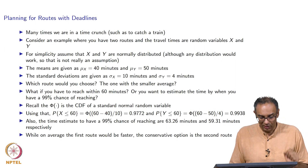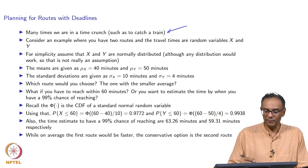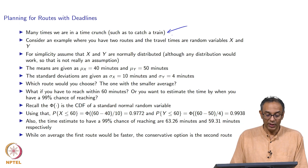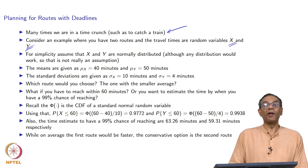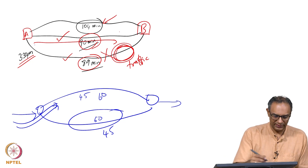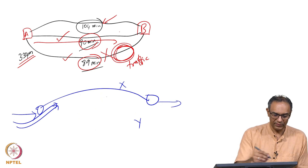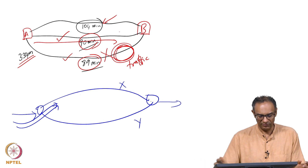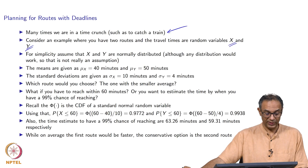Now, planning routes with deadlines. Many times we are trying to get to a place before a certain time — for example, you have a train to catch and want to be at the station at a reasonable time. You have two routes, and the travel times on the two routes are X and Y — random variables. Route X is one route and route Y is another route, giving two ways to go from home to the station.